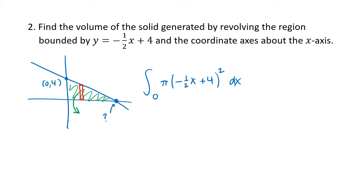The only thing we haven't figured out yet for our integral setup is that ending x value. We're looking for where this function crosses the x-axis, so we set negative one-half x plus 4 equal to 0. Subtracting 4 from both sides and multiplying both sides by negative 2 gives us x equals positive 8. So that's the x value that we integrate to.